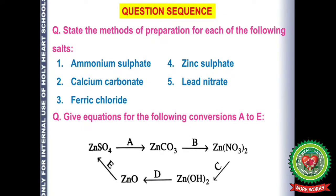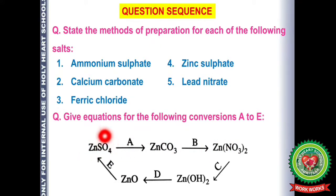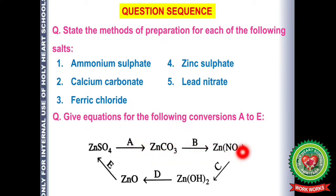There are some questions flashing on your screen which you can solve using today's lecture. For example: to convert zinc sulfate into zinc carbonate, use sodium carbonate, since carbonic acid is unstable. If you want nitrate as the anion, use nitric acid. Similarly, you can work out the other parts.